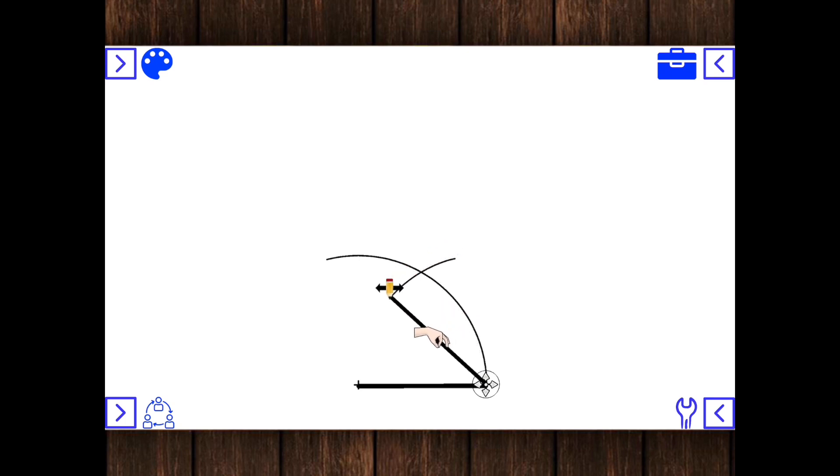And where the two arcs intersect, that is going to be the center of a circle. So let's draw a circle. And if you notice, the circle touches both ends of that line.